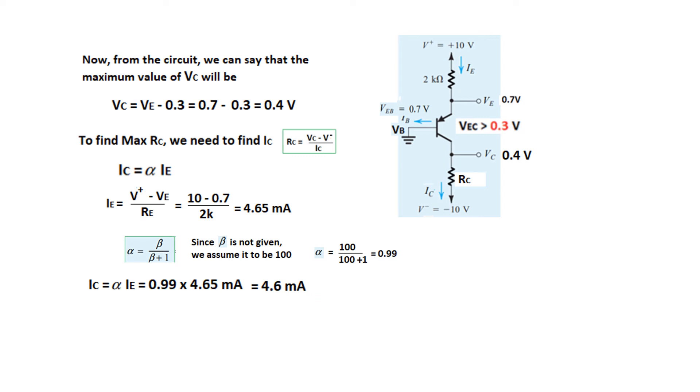Now, that we have found IC, we know VEC, we know this voltage. And, so, RC can be found. As the maximum is VC minus V minus divided by IC. I am putting all the values. This value comes to be 2.26 kilo ohm. So, this is question 6.25.